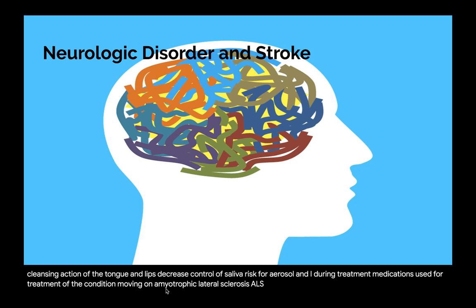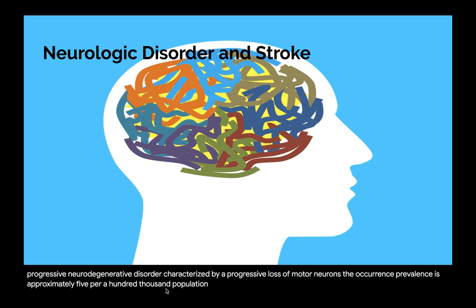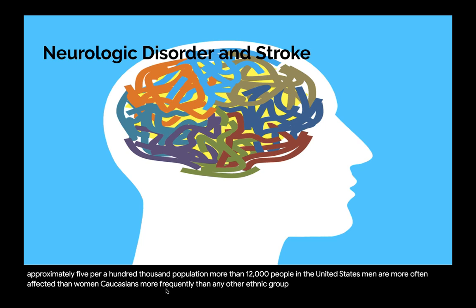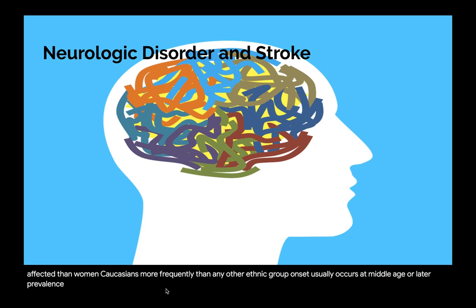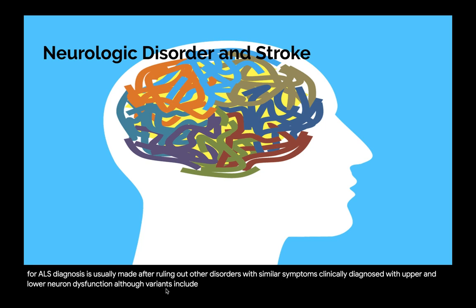Amyotrophic lateral sclerosis (ALS), often referred to as Lou Gehrig's disease, is a progressive neurodegenerative disorder characterized by a progressive loss of motor neurons. Prevalence is approximately 5 per 100,000 population, with more than 12,000 people in the United States affected. Men are more often affected than women, and Caucasians more frequently than any other ethnic group. Onset usually occurs at middle age or later, with the highest occurrence in those aged 70 to 79 years. There is no diagnostic test for ALS; diagnosis is usually made after ruling out other disorders with similar symptoms.